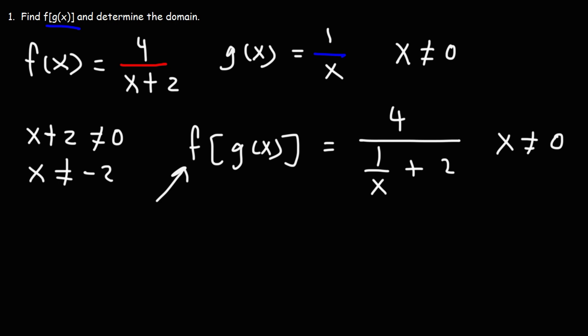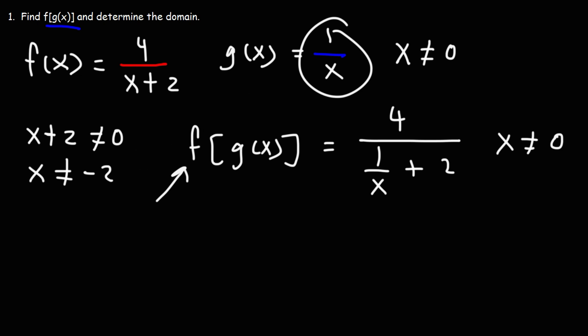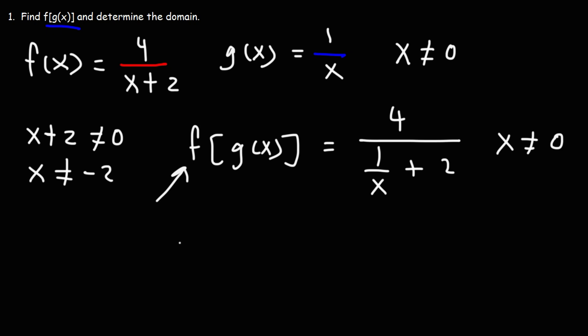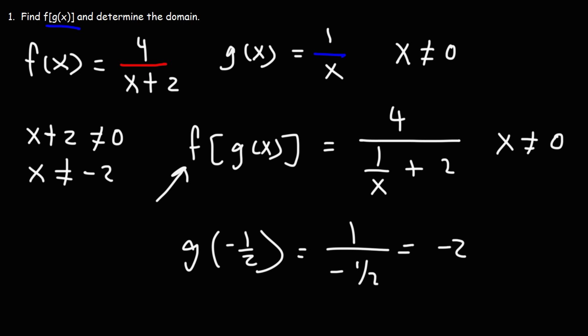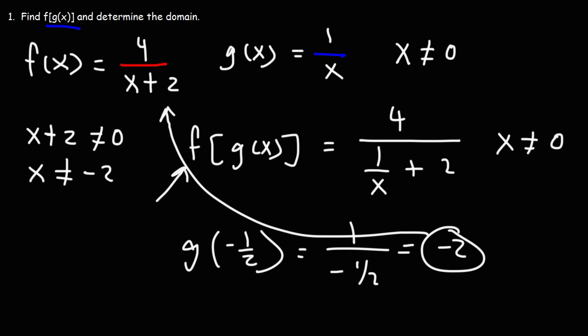Here's another important point: any x value for which g of x is not in the domain of f must not be in the domain of the composite function f of g of x. The x value that gives you negative 2 will not work. What number can we plug into x that gives us a g value of negative 2? That would be 1 over negative 2, which is negative 1 half. So g of negative 1 half equals 1 over (negative 1/2), which equals negative 2 — and we can't plug negative 2 into f.